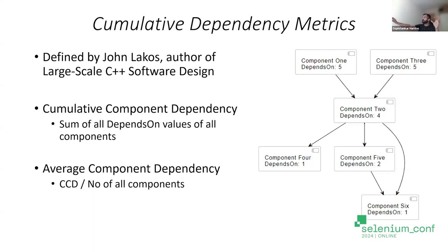You can consider component one as the controller, then you have the presentation layer, service layer, models, repositories, data access objects, etc. — all considered components. The cumulative component dependency for the whole project is the sum of all depends-on values: five plus five is ten, plus four is fourteen, plus four is eighteen. So CCD equals 18. The average component dependency (ACD) is CCD divided by the number of components: 18 divided by 6 equals 3.